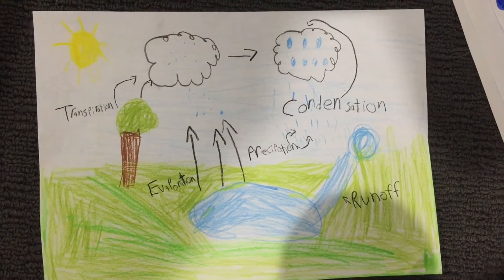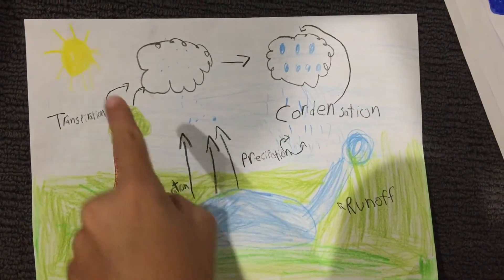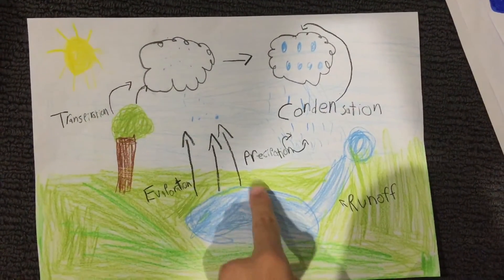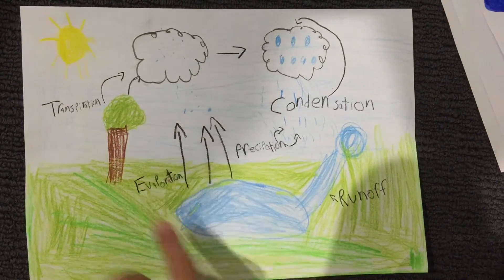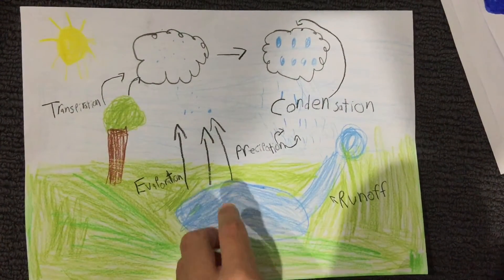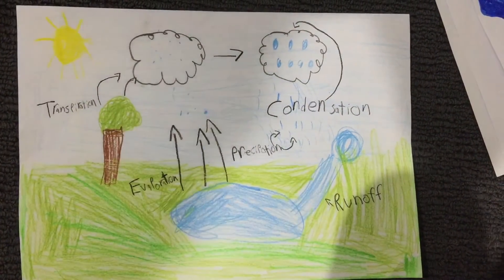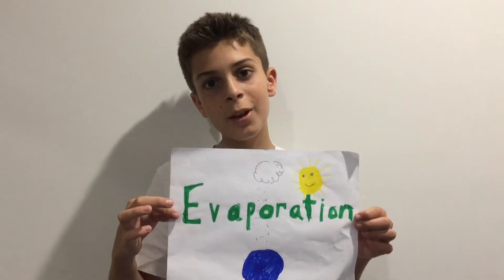First it's evaporation. See right here, the sun is very hot so it heats up all the water, and all that water evaporates up into the clouds. And that was evaporation.